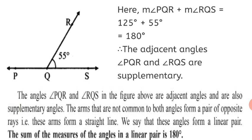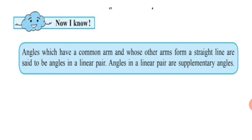You should not have any confusion. You have already learnt what adjacent angles are, what supplementary angles are, and what opposite rays are. A combination of all three makes angles in a linear pair. Angles in a linear pair are always supplementary angles.